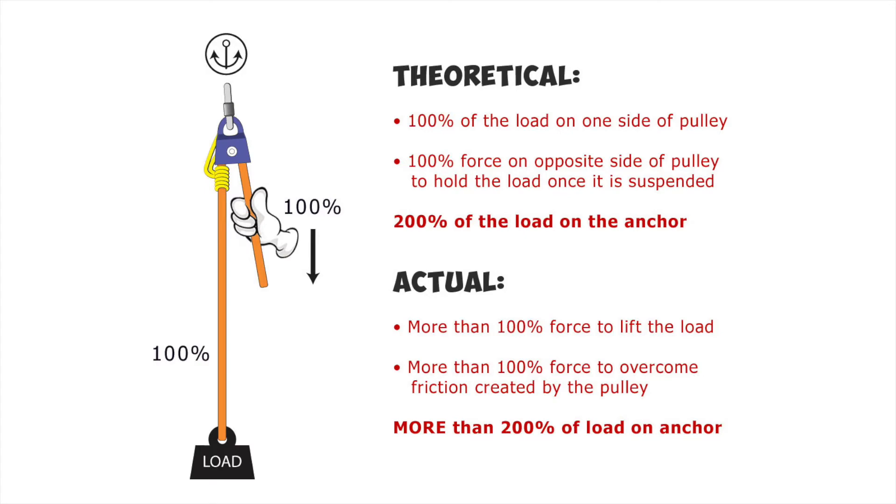But those are only theoretical numbers. I need to generate 100 pounds of force just to hold the load. To move the load, I need to generate more than 100 pounds of force. If 101 pounds of force is enough to move the load, there will be 201 pounds of load on the anchor. But that would assume I have a perfect frictionless pulley. In actual practice, I must generate enough force to lift the 100 pound load plus overcome the friction created by the pulley.